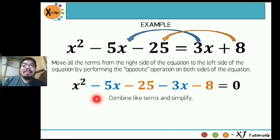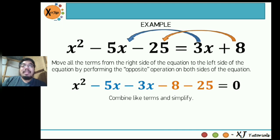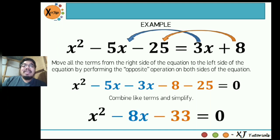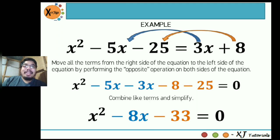The like terms are -5x and -3x, then -25 and -8. Rewriting with like terms together: x² - 5x - 3x - 8 - 25 = 0. Simplifying: -5x - 3x = -8x, and -8 - 25 = -33. So the equation in standard form is x² - 8x - 33 = 0.